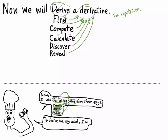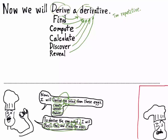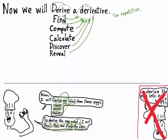To derive the egg salad, he would say: 'I will boil, peel, and mash the eggs.' Boil, peel, and mash are transitive verbs whose object is the eggs. But we would never say 'derive the eggs into egg salad' — that's an absurd statement, because the object of the verb 'derive' is not the eggs. It's the egg salad. So don't make the same mistake in calculus.